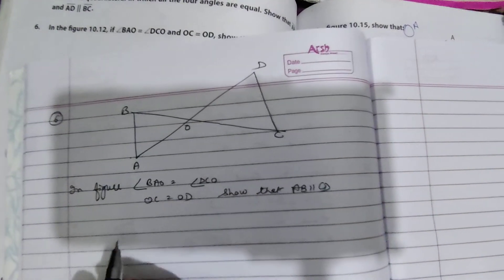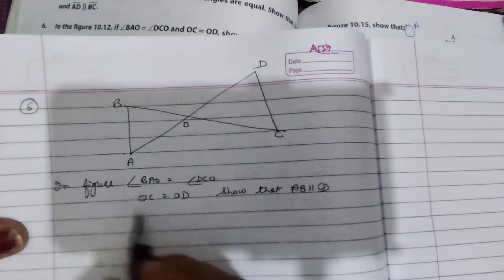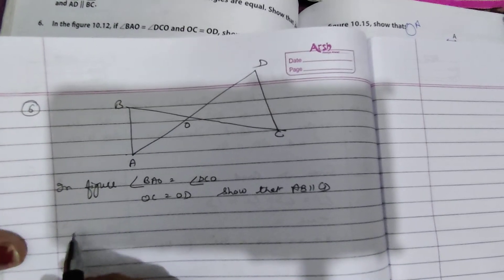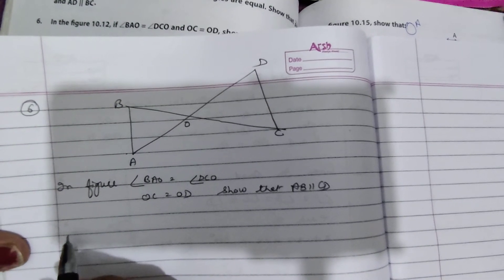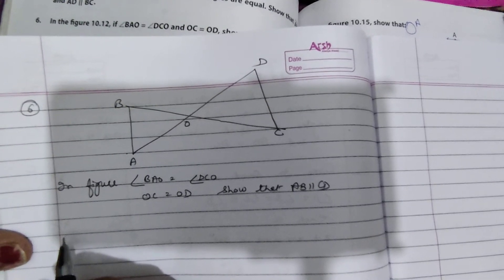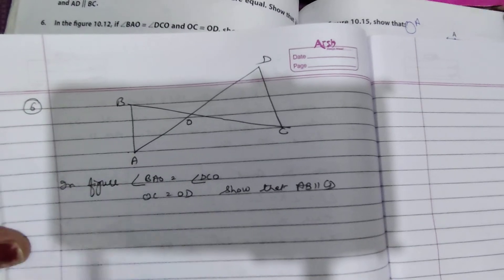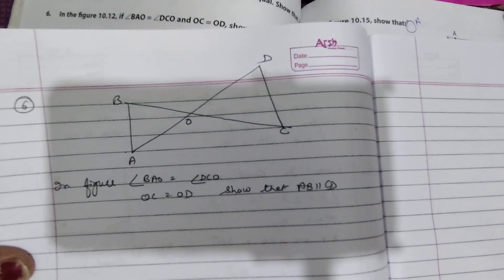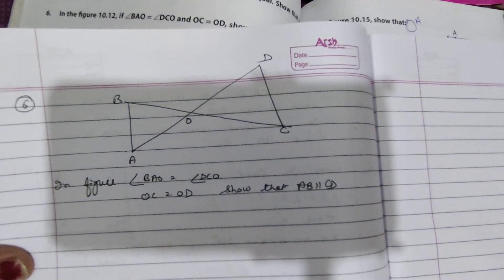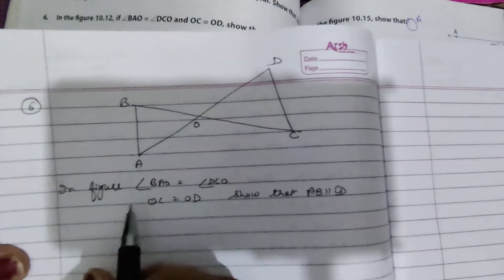Welcome, dear students. We are going to start Sum number 6 of Chapter 8, Parallel Lines, Standard 8th. In the previous video we have done Sum number 5, now we are going to start Sum number 6.